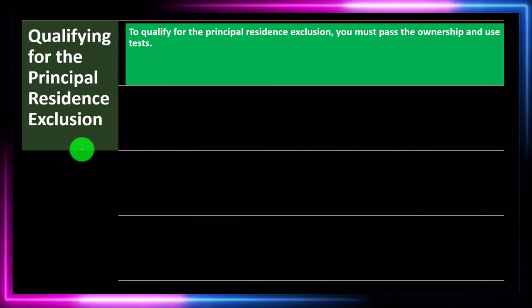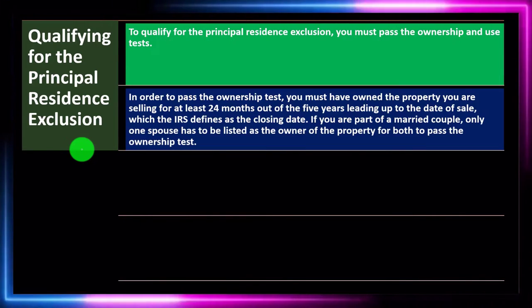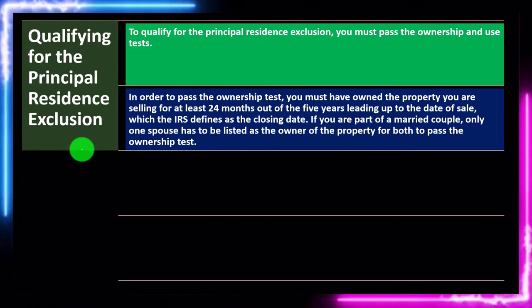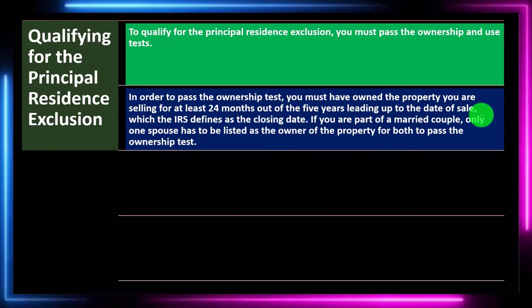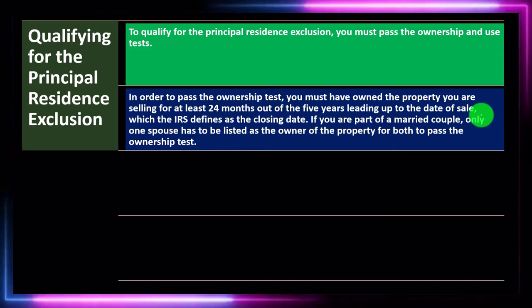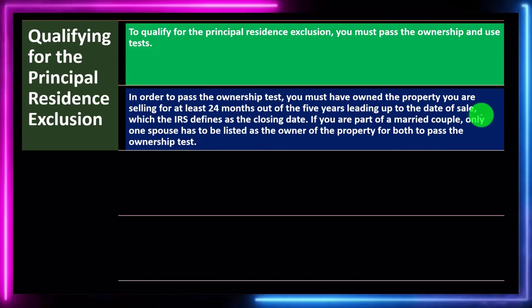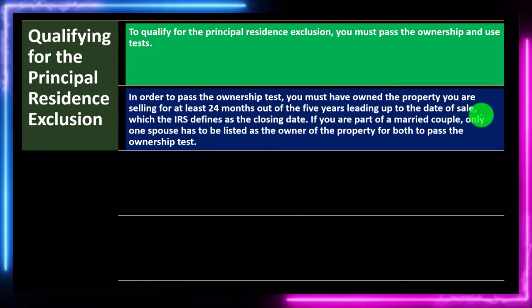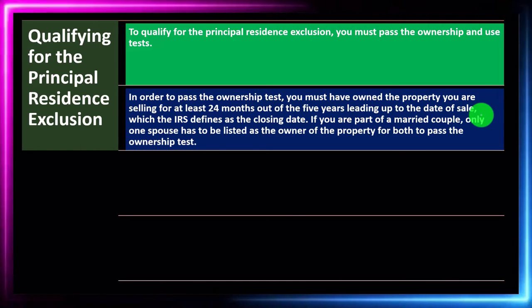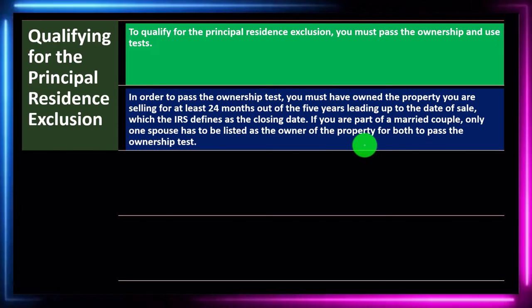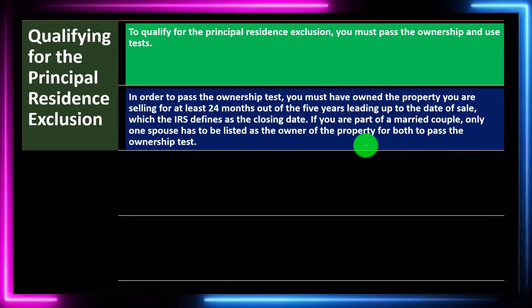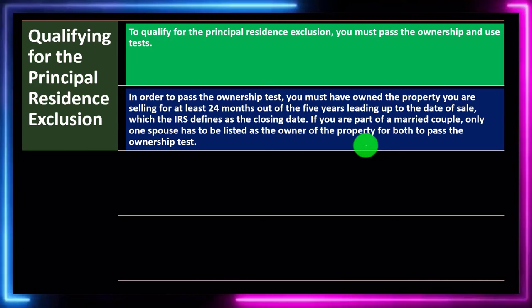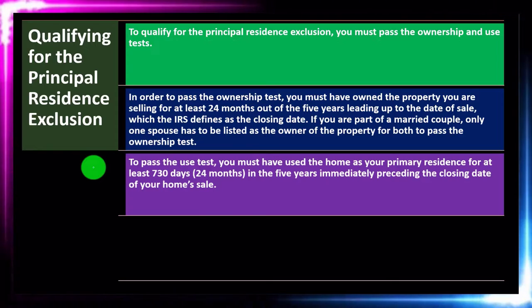To qualify for the principal residence exclusion, you must pass the ownership and use tests. To pass the ownership test, you must have owned the property you are selling for at least 24 months out of the five years leading up to the date of sale. The IRS defines this around the closing date. If you are part of a married couple, only one spouse has to be listed as the owner for both to pass the ownership test. Situations can get complex when going from single to married to divorced, so you may need to dive into more detail in some cases.